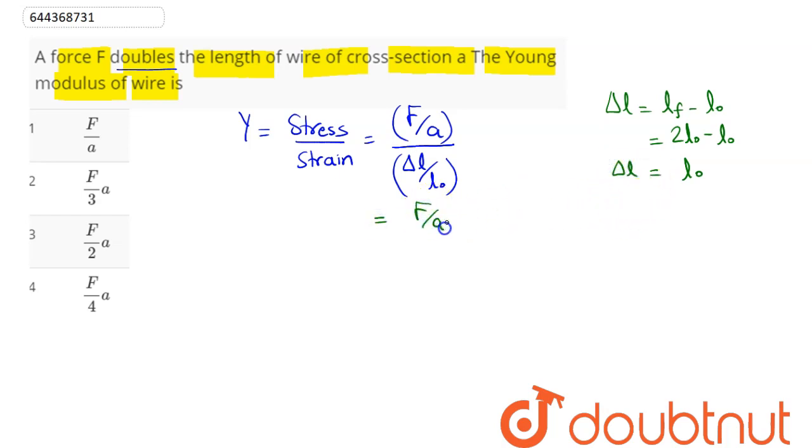So this comes as F by A, and delta L equals L0, so delta L by L0 becomes 1. So Young modulus here comes as F by A. Hence we can say option number 1 is the correct answer.